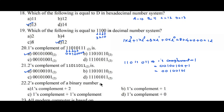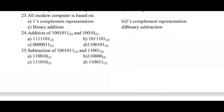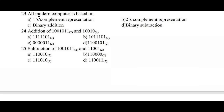Question number twenty-two: how is the 2's complement of a binary number determined? It is found by taking the 1's complement plus 1, so option B is the right answer. Question number twenty-three: all modern computers are based on — option B, 2's complement representation, because it reduces hardware complexity.